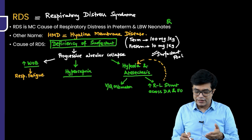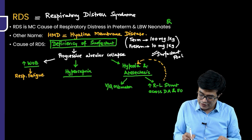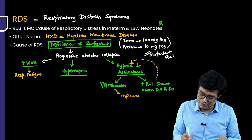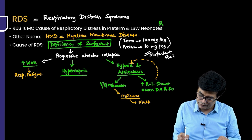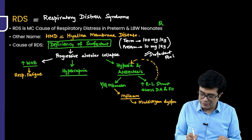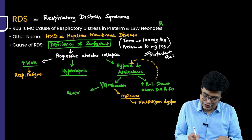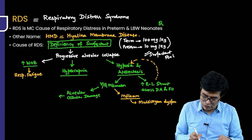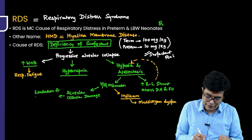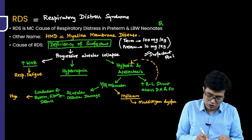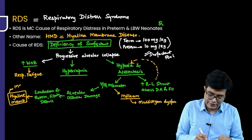This ventilation-perfusion mismatch and hypoxia cause release of inflammatory mediators, leading to multi-organ dysfunction and shock in untreated cases. The VQ mismatch also causes alveolar cellular damage — not only type 2 cells but type 1 cells get damaged as well. This leads to exudation of proteinaceous substances, fibrin, and debris into the alveolar lumen, forming the hyaline membrane — hence the name hyaline membrane disease. The hyaline membrane itself then causes inactivation of surfactant, worsening the cycle.